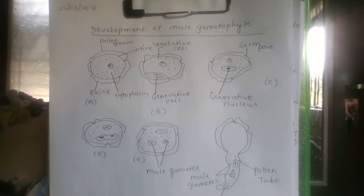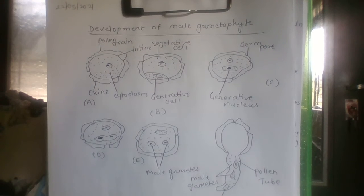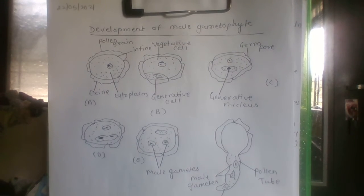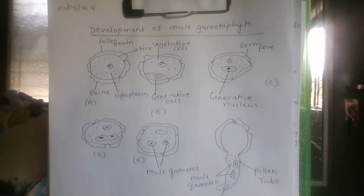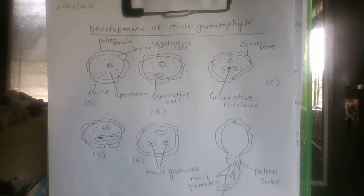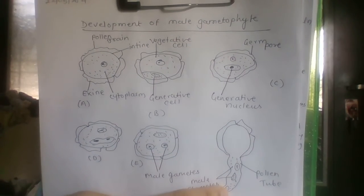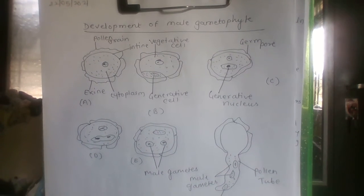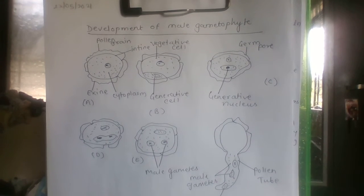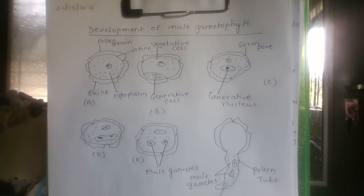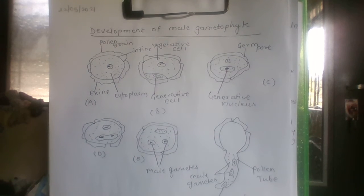The second mitotic division concerns the generative cell only and gives rise to two motile male gametes. The mitotic division of the generative cell takes place either in the pollen grain or in the pollen tube. The pollen grains are shed from the anther at this two-cell stage in most angiosperms.